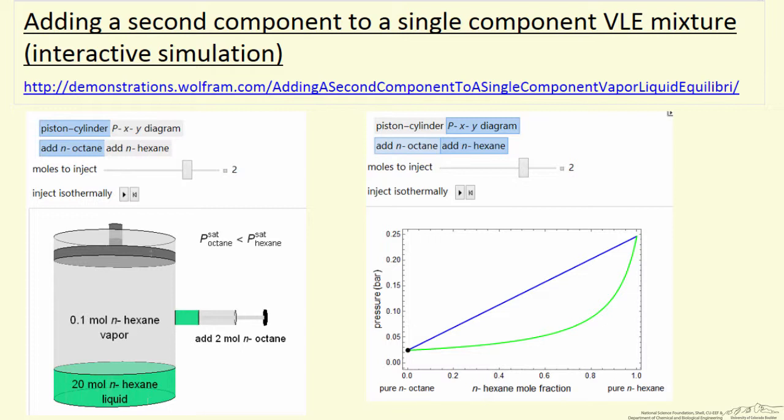One of the important aspects that's represented in this diagram is that this is an ideal solution modeled by Raoult's law. The saturation pressure of hexane is higher than the saturation pressure of octane.